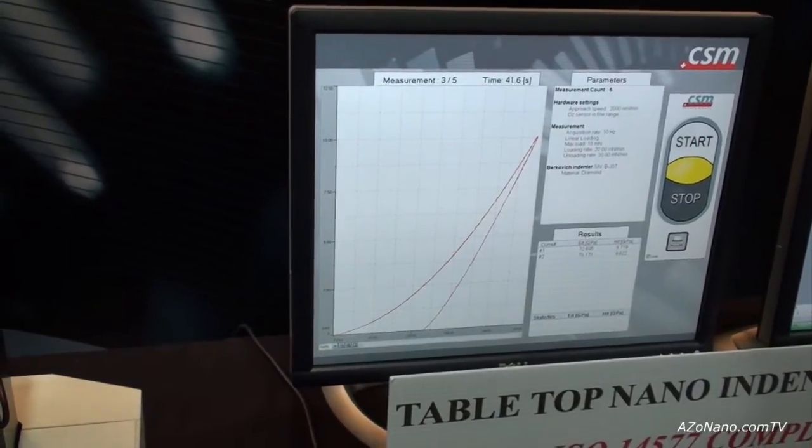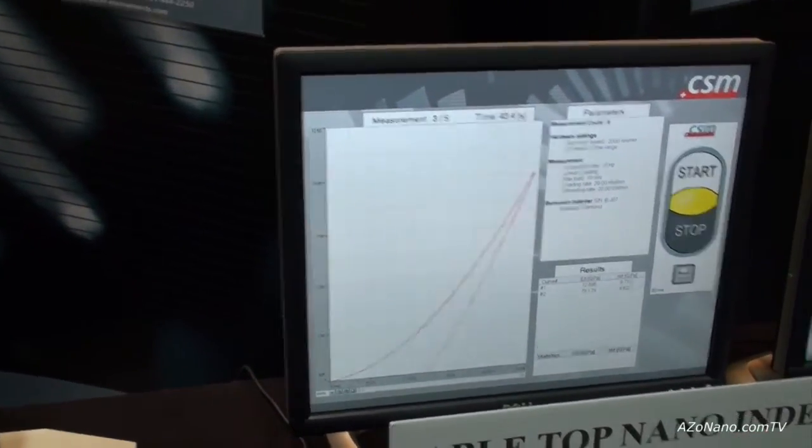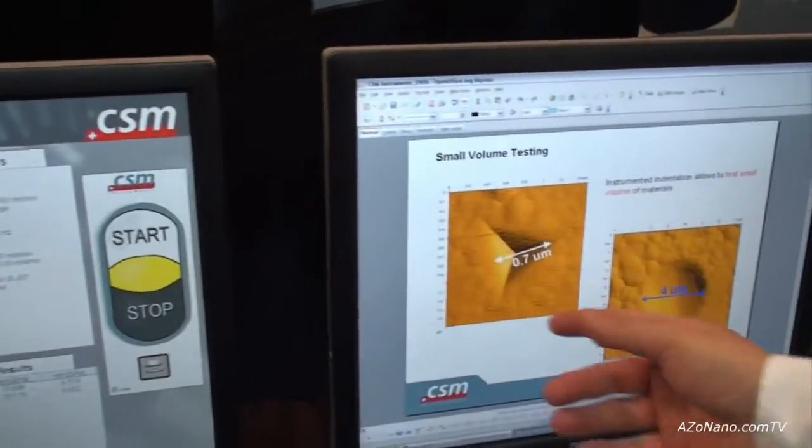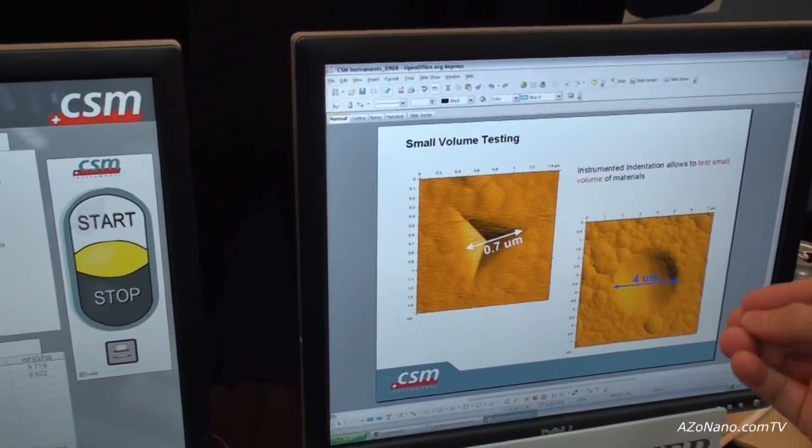The curve that you get can also be correlated with what you see under the microscope. So, if you're looking at the indentation, you can also take microscopic observations.